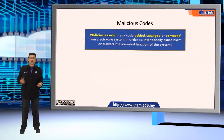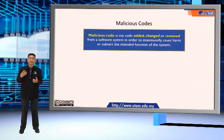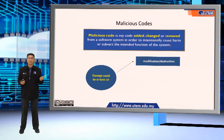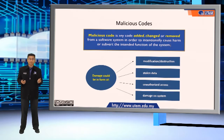So what is a malicious code? A malicious code or malicious program is a code added, changed, or removed from a software system in order to intentionally cause harm or subvert the intended function of the system. The damage could be in the form of modification or destruction, stolen data, unauthorized access, or damage to the system itself.